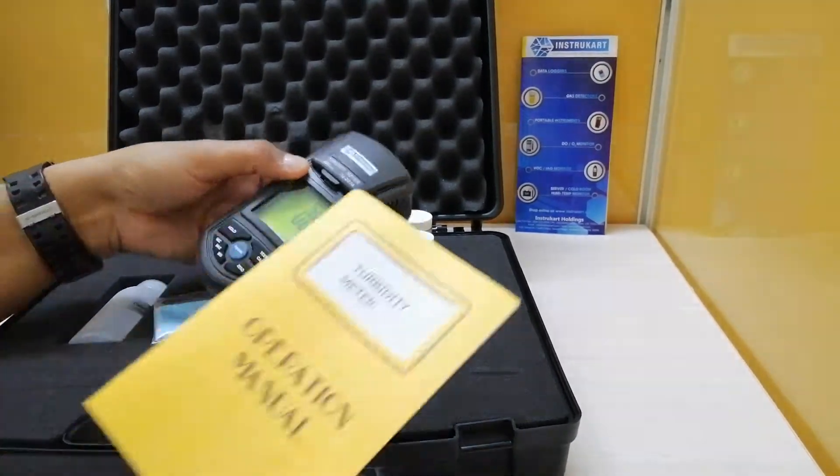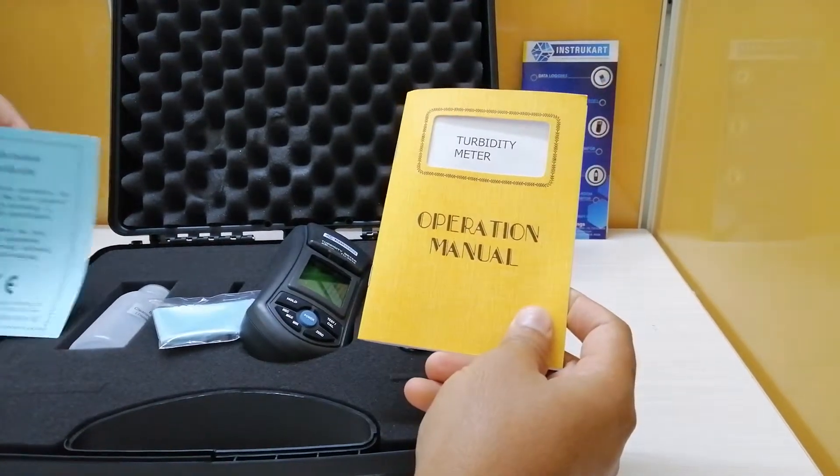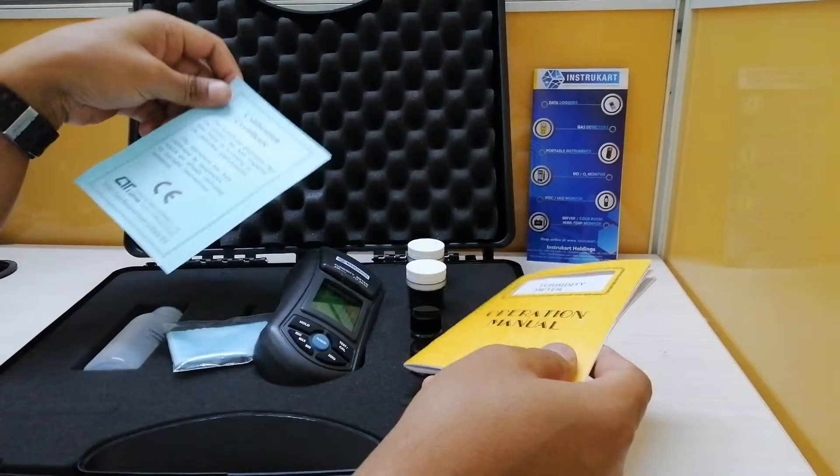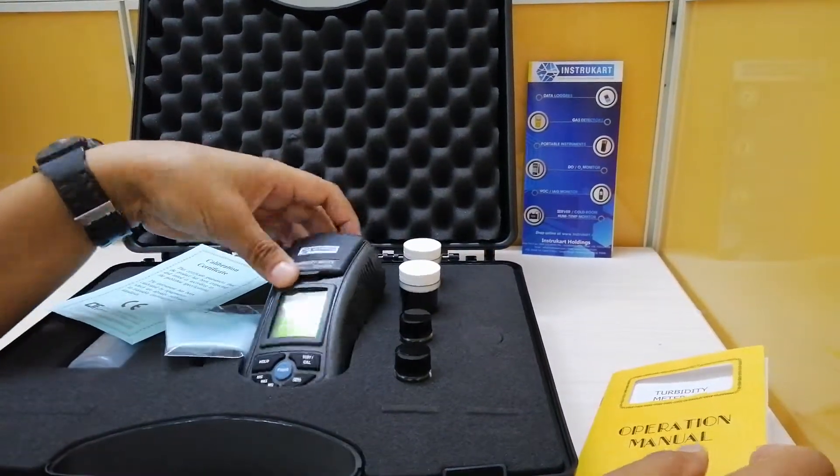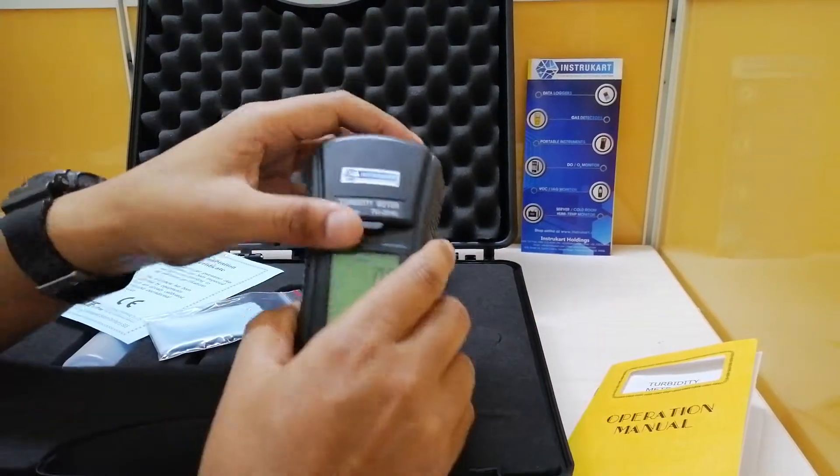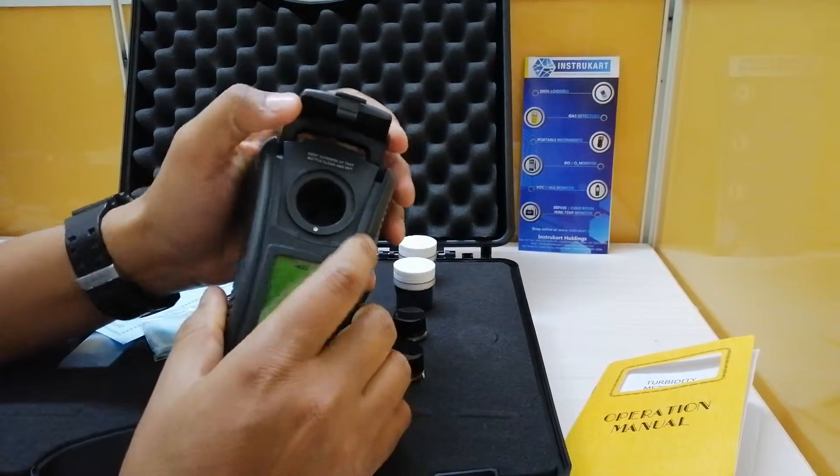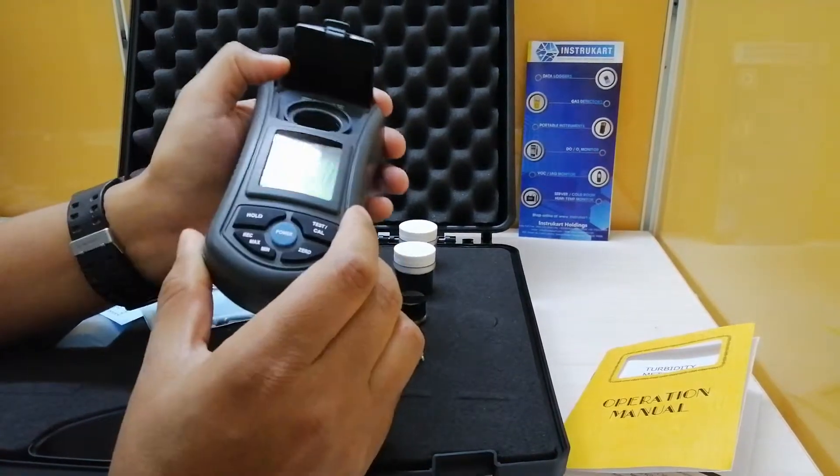You also get an operation manual along with this and a calibration certificate. This particular area is for the testing. You need to insert that and probably see the turbidity of the same.